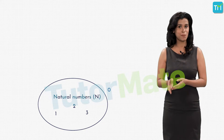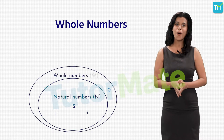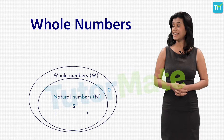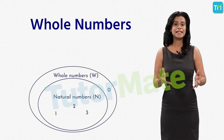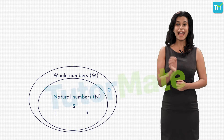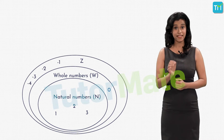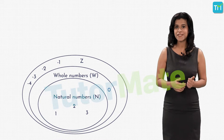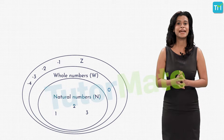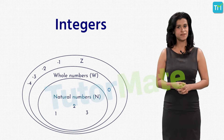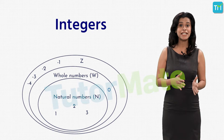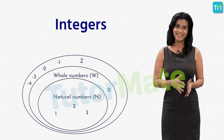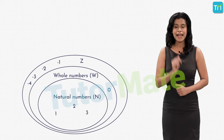Next, when we include 0 in the set of natural numbers, we get a new group called whole numbers, which include 0, 1, 2, 3, and so on till infinity. And when we add negative numbers to this set — the numbers less than 0 on the left side of the origin on the number line — we get integers, which range from negative infinity to minus 1, then 0, and then natural numbers from 1 to infinity.